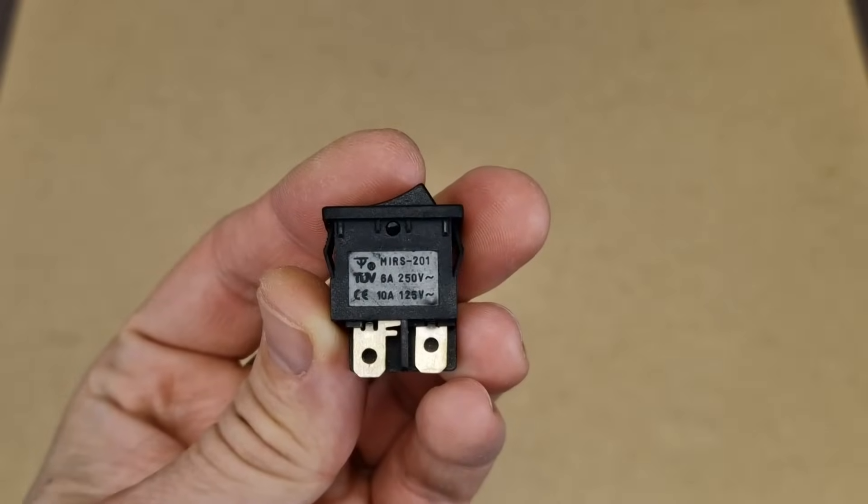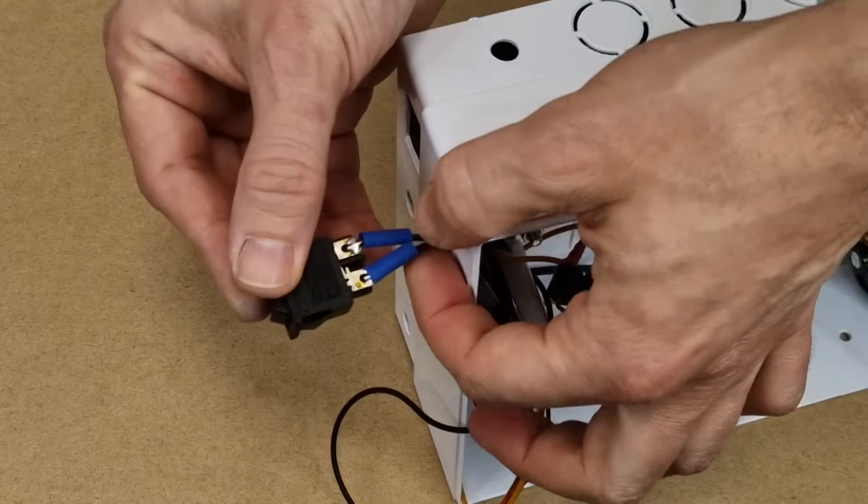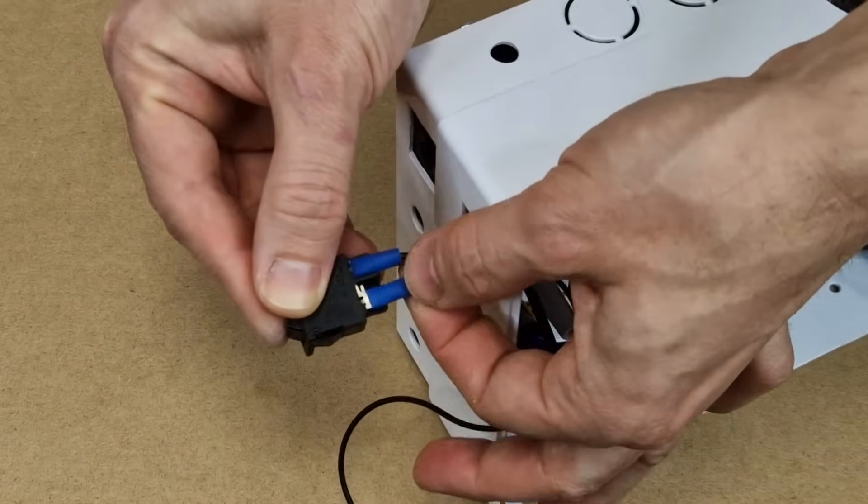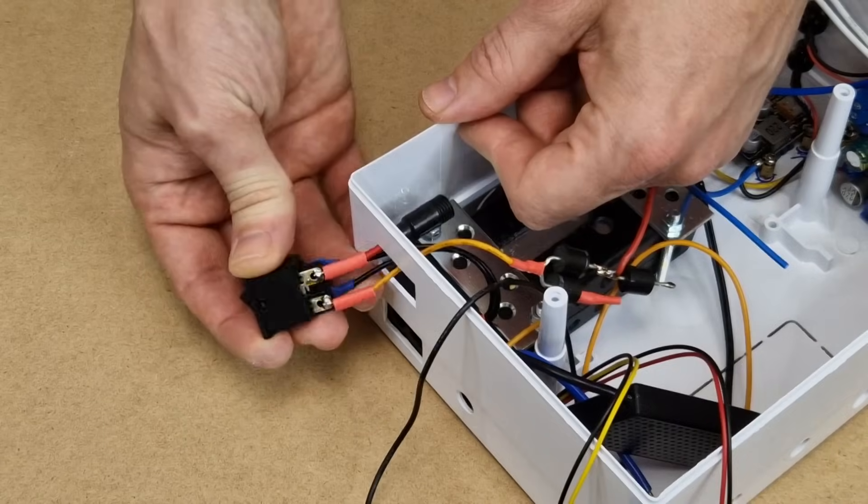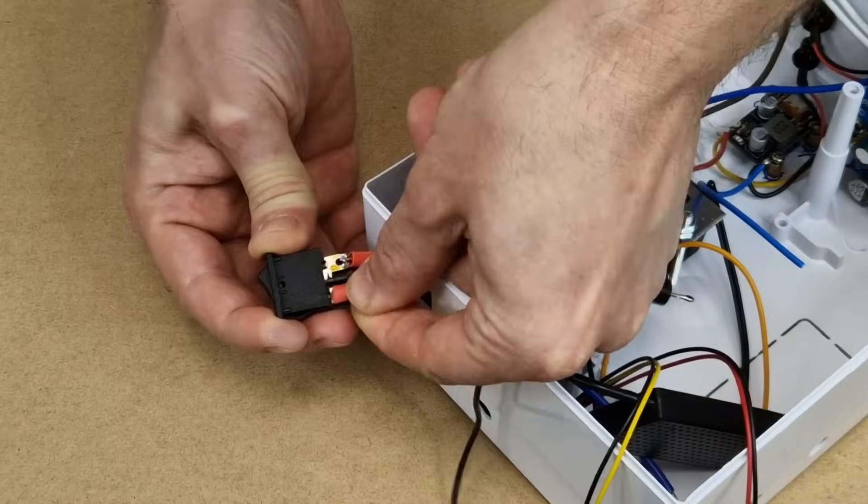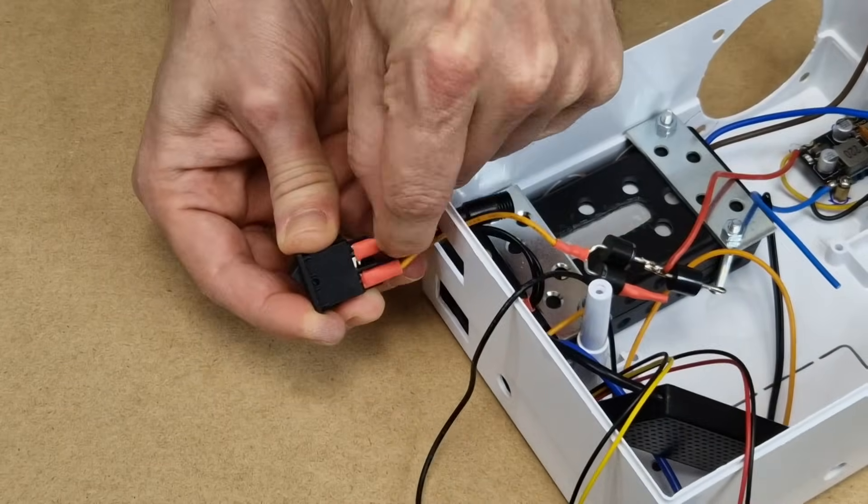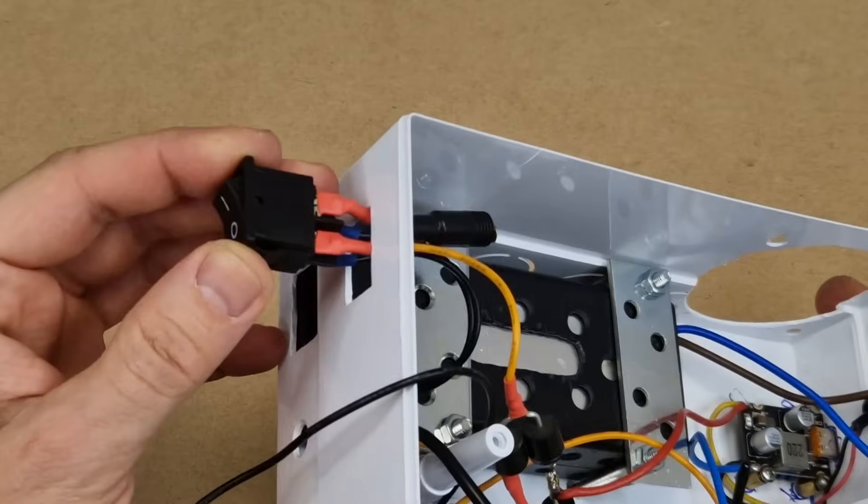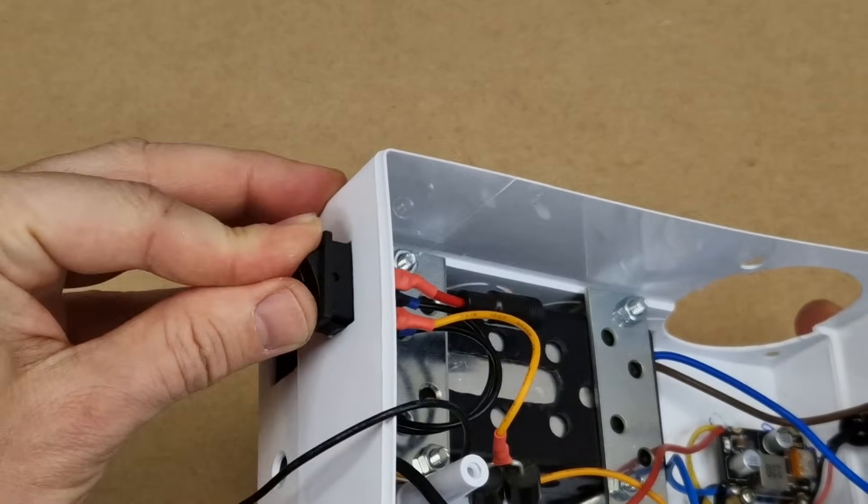This is a double pole rocker switch. It will completely shut down the UPS. One pole is for the mains input to the charger, and the other pole is for the positive wire of the battery. I've covered all the soldering joints with heat shrink tubes as best as I could.